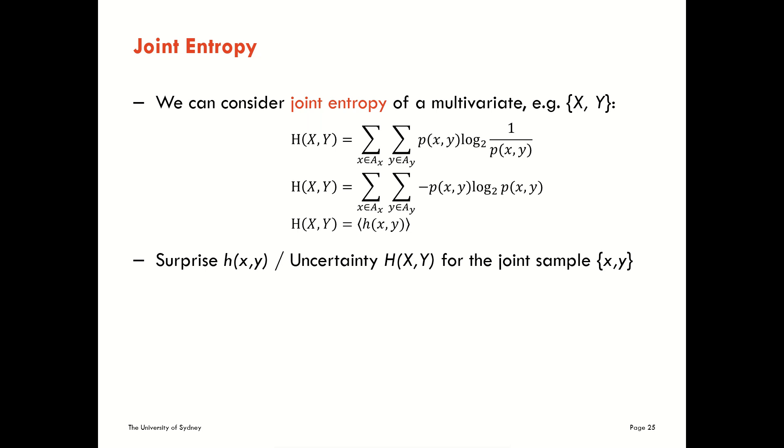We could also ask about the variables themselves. What's the average uncertainty in the hair color? Or we could ask about what's the joint, the average joint uncertainty in the hair color and the eye color together. Okay, so the joint entropy is a straightforward generalization of the Shannon entropy and Shannon information content to joint or multivariate.